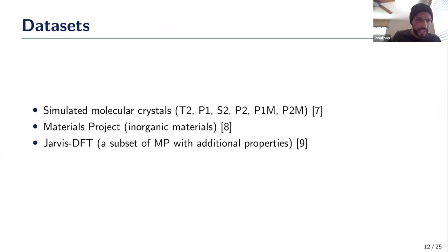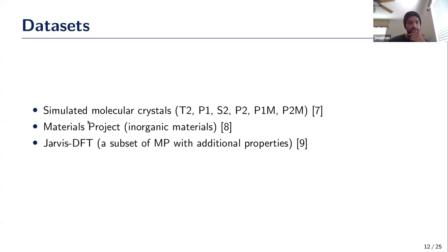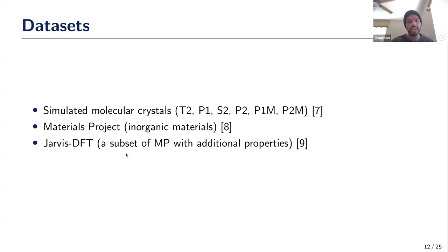We conducted experiments using three datasets. First, a set of simulated molecular crystals where all crystals share the same composition but vary in atomic arrangement. Second, the Materials Project, a common benchmark of inorganic materials used for property prediction. Third, Jarvis DFT, a subset of the Materials Project with some crystals from the ICSD with properties recomputed using a different DFT method, as well as additional properties.